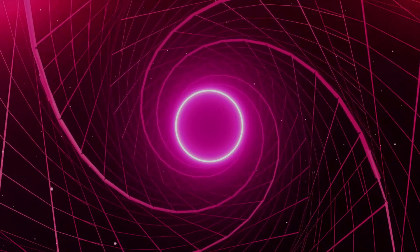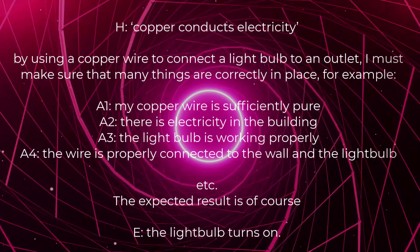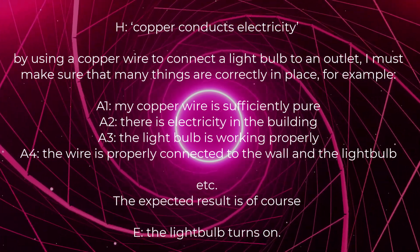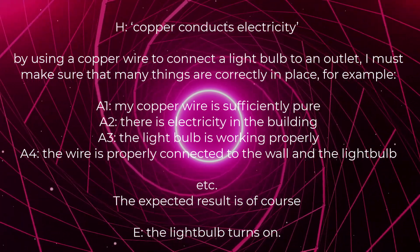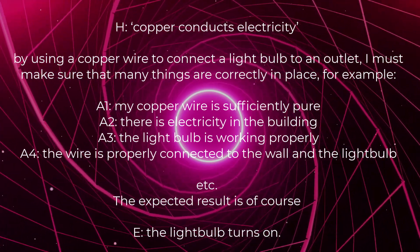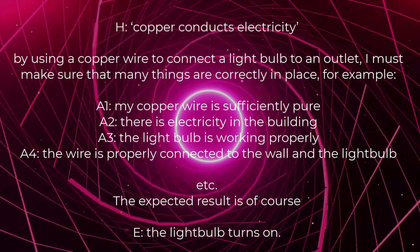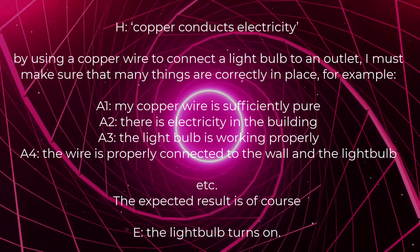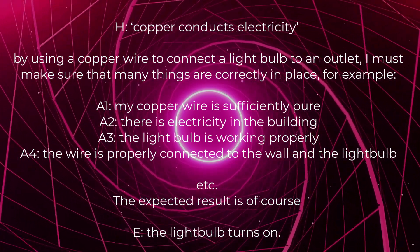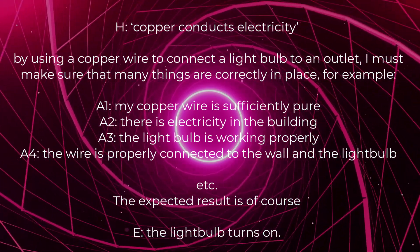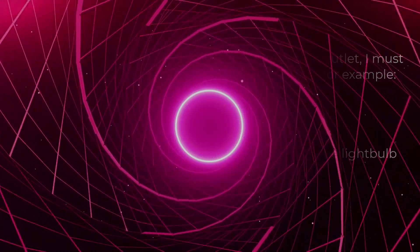I want to test the hypothesis H: copper conducts electricity, by using a copper wire to connect a lightbulb to an outlet. I must make sure that many things are correctly in place. For example: A1, my copper wire is sufficiently pure; A2, there is electricity in the building; A3, the lightbulb is working properly; A4, the wire is properly connected to the wall and the lightbulb. The expected result is E: the lightbulb turns on. The logical form of the experiment is this.